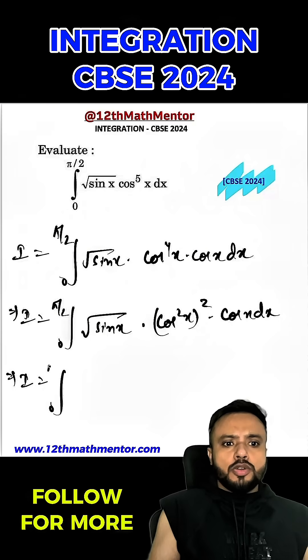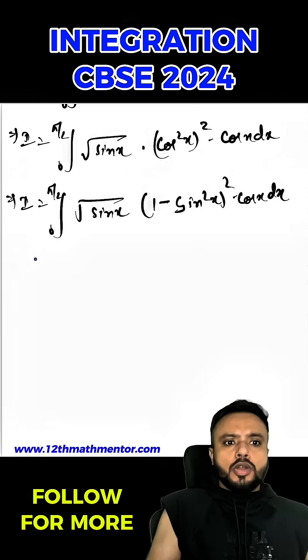Hence, I can write i as 0 to pi by 2 root of sin x into 1 minus sin square x square into cos x dx.